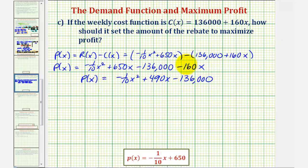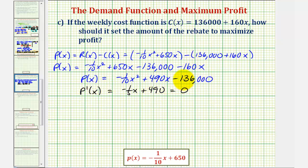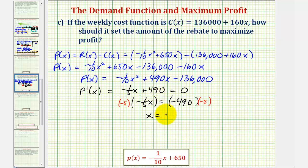To maximize the profit function, we determine the critical numbers by finding where the first derivative equals zero or undefined. P prime of X equals negative one-fifth X plus 490. This is never undefined, so we set it equal to zero and solve. Negative one-fifth X equals negative 490. Multiplying both sides by negative five gives X equals 2,450.